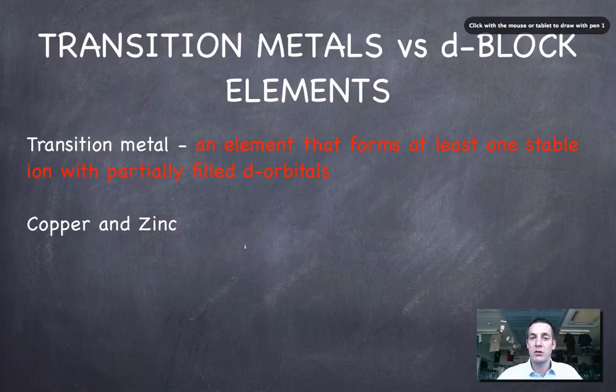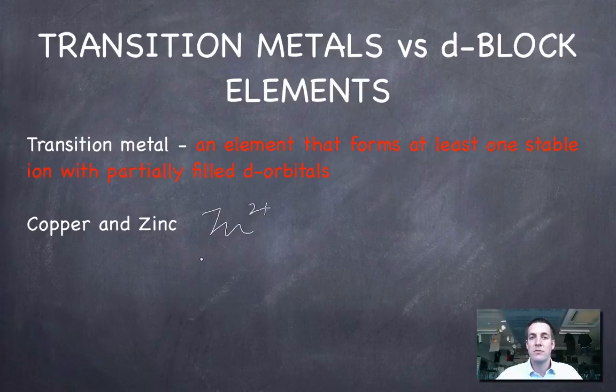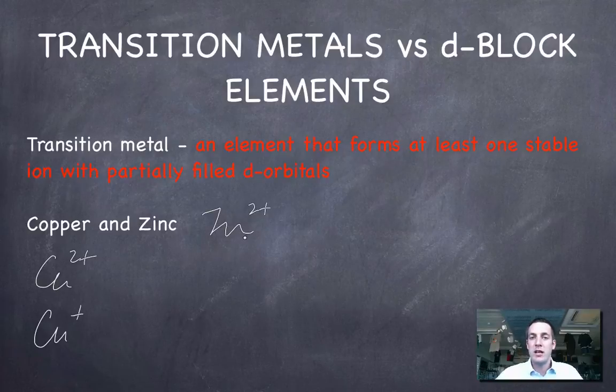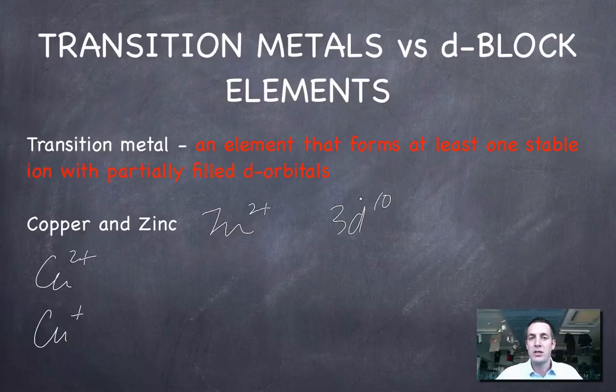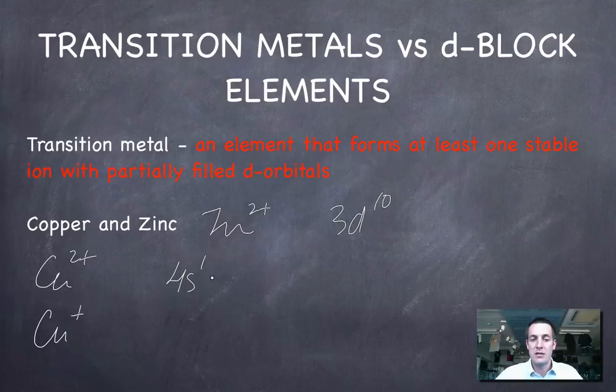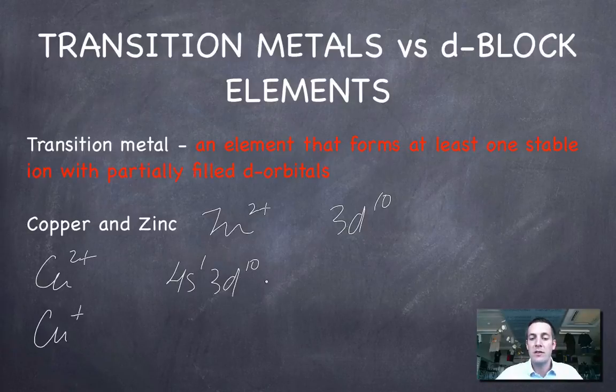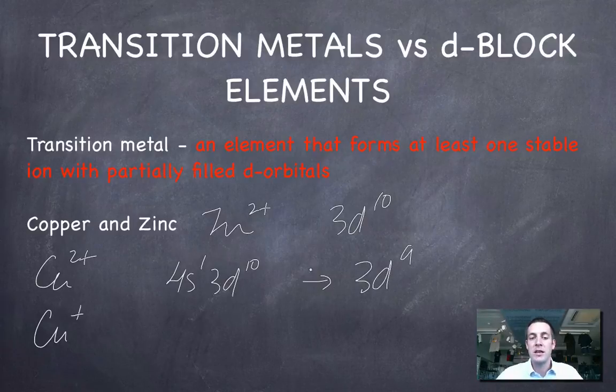Now if we cast our minds back to what we're saying about oxidation numbers we will remember hopefully that zinc forms a 2 plus ion but it doesn't form any others and copper forms a 2 plus and a 1 plus. We've just looked at the electron configuration of zinc 2 plus but it basically ended up with 3d10 at the end. So this is a stable ion but there's no partially filled d orbitals here, they're all completely full. Copper 2 plus which the atom ends in 4s1 3d10, copper 2 plus would lose this electron and one of these so it would end up with no 4s electrons and 3d9. Now copper 2 plus is a stable ion and it does have a partially filled d orbital.